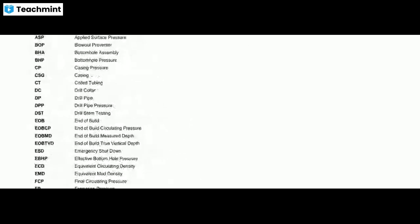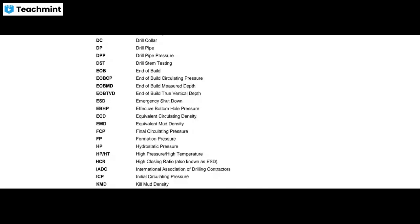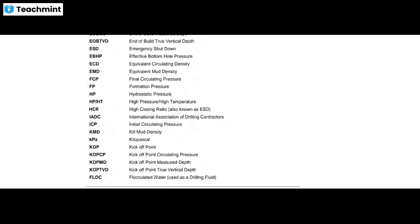So these are the basic things which are utilized in well control engineering. What are the abbreviations you can see here: annular capacity, annular pressure loss, bottom hole assembly, casing, coil tubing, drill collar, etc. These are the acronyms and abbreviations utilized in well control engineering, such as EBHP — effective bottom hole pressure, ECD — equivalent circulating density, EMD, FCP — final circulating pressure, ICP — initial circulating pressure, KMD — kill mud density, etc.